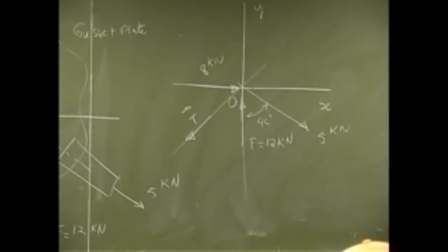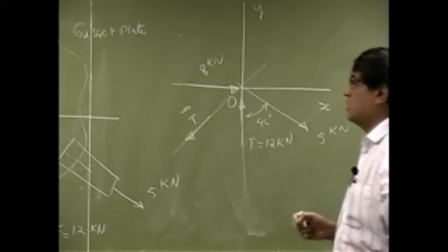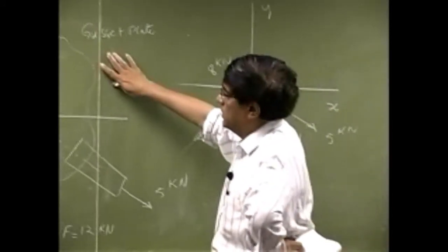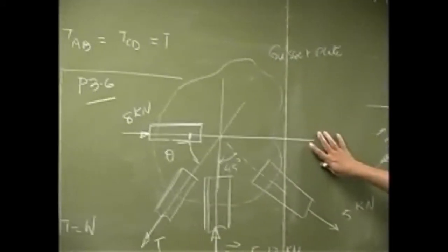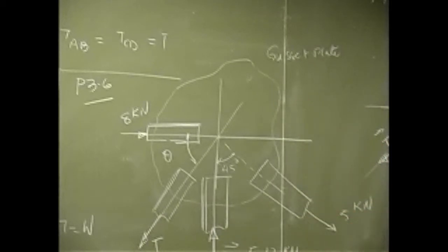So that's the free body diagram for that problem where you omit the details of the actual structure. So you are not drawing the cassette plate, you are not drawing any of these members. What you are really drawing is the forces which are acting at this point O.